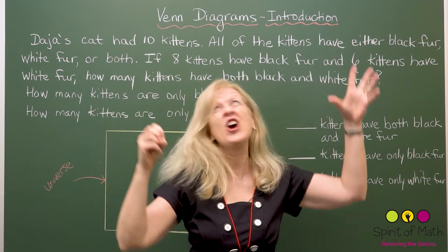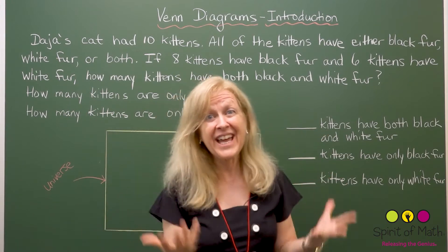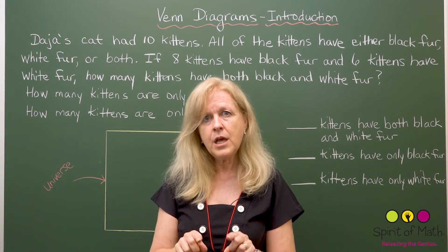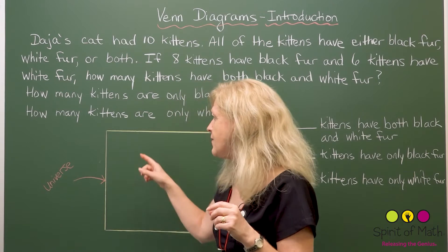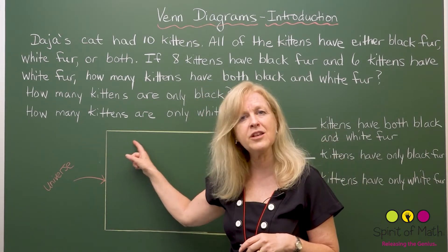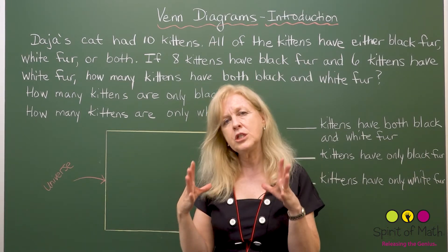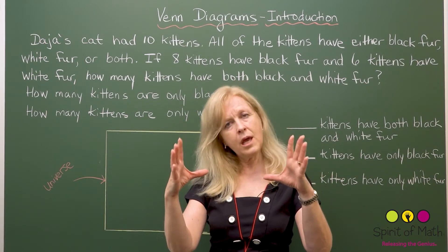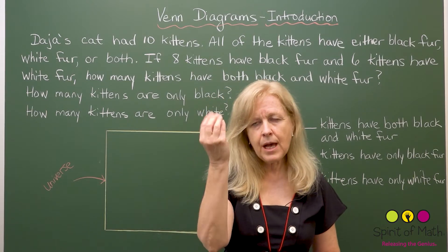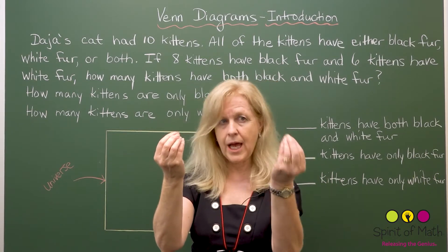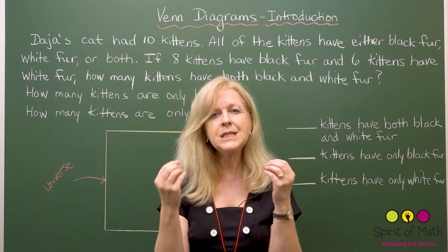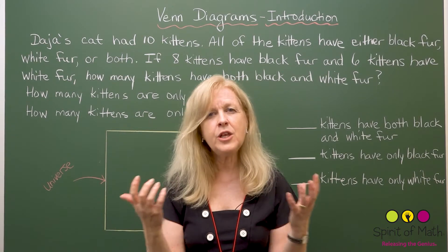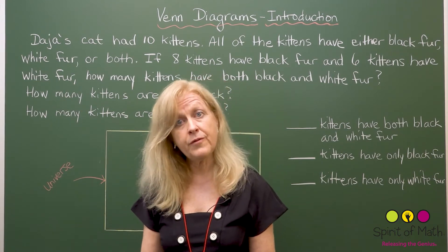Usually a universe has stars and moons and planets in it, but in this case we're going to say the universe is Daja's kittens. We're going to show that with a rectangular universe — just Daja's kittens, nothing else, no other kittens anywhere in the world. Then from there, you can recognize it because you have some kittens that have this and some that have that and some who have both. When you see that language, you know you can organize it using a Venn diagram.